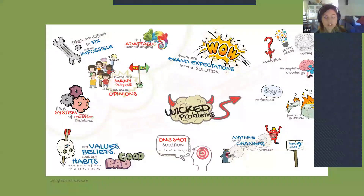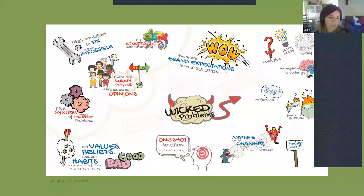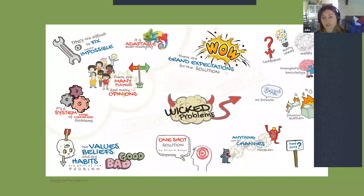Bushmeat is a 'wicked problem' — not merely complex but truly multifaceted and very difficult to solve. There's a diagram illustrating why these problems are so hard to address: bushmeat fits into many of these categories, including issues around values and beliefs, many interconnected problems, and grand expectations for solutions.